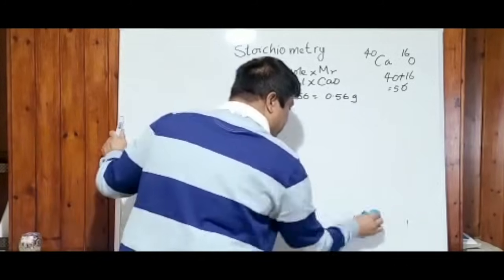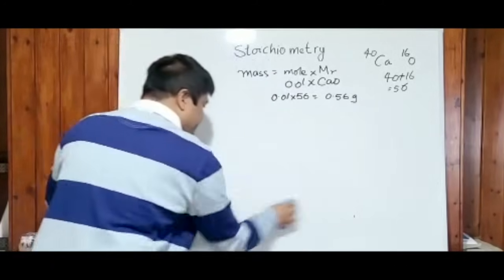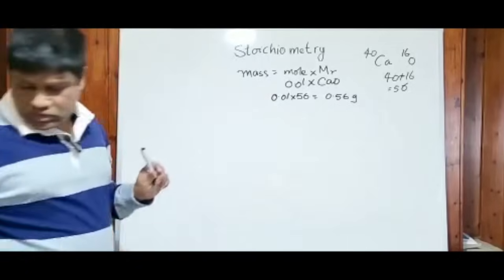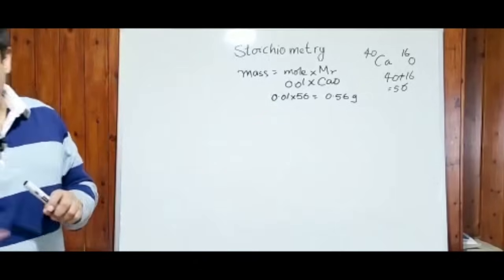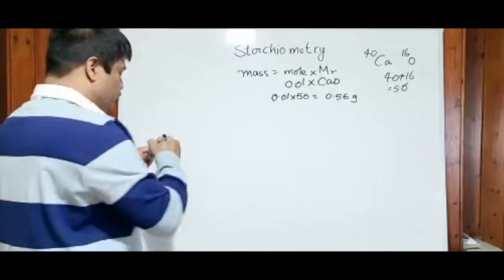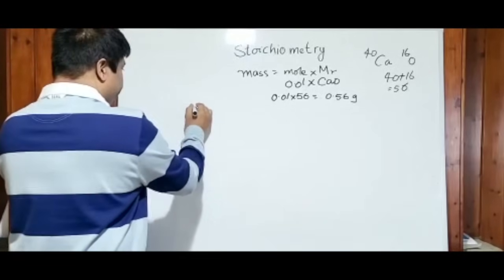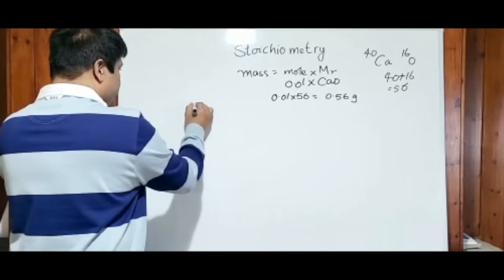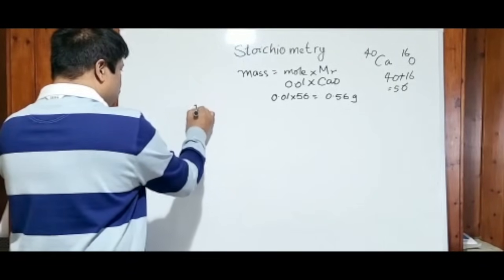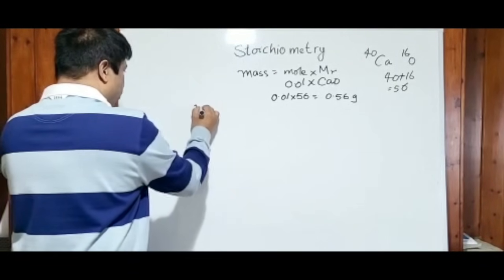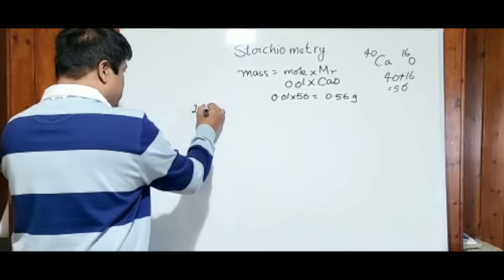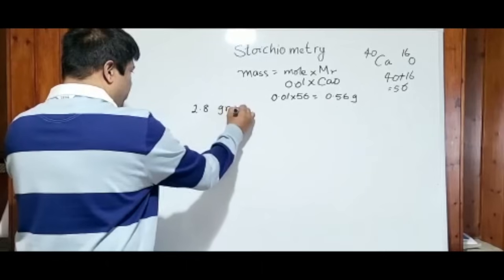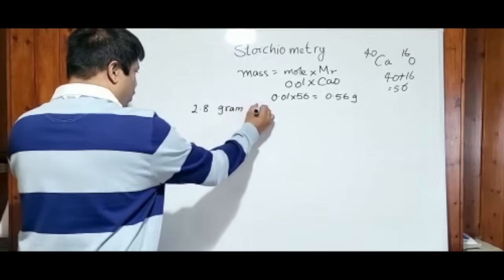Now let's look at the formation of ammonia by the Haber process. 2.8 grams of nitrogen gas...